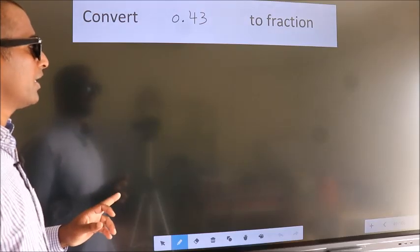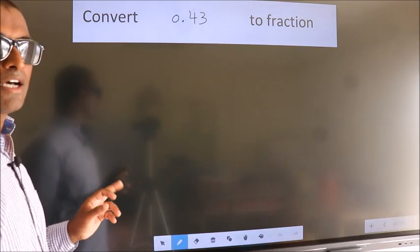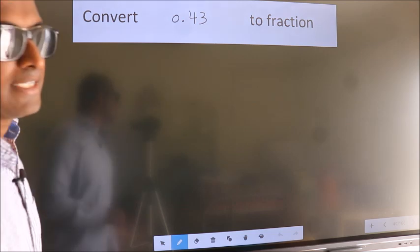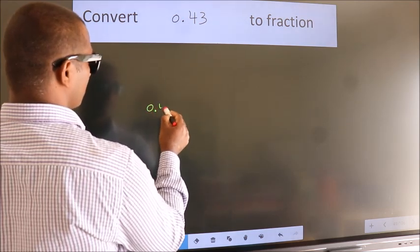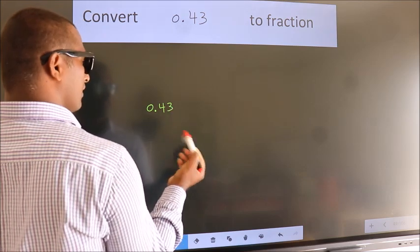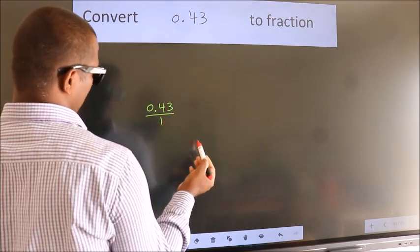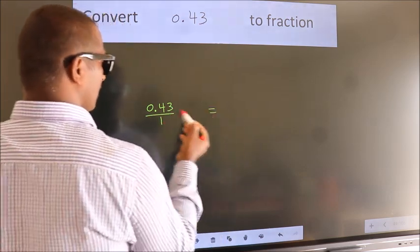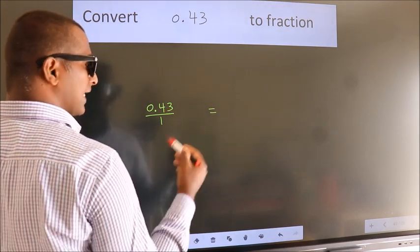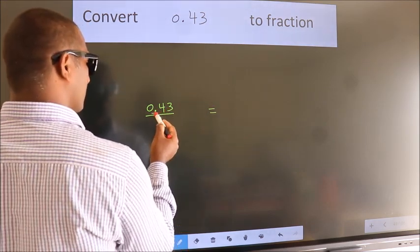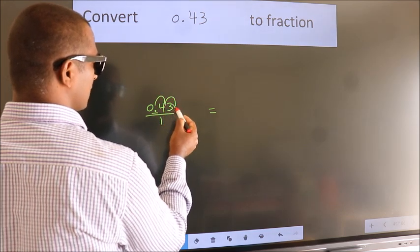Convert 0.43 to a fraction. Given is 0.43, we take it as 0.43 by 1. To convert this to a fraction, we should move this decimal after 2 numbers.